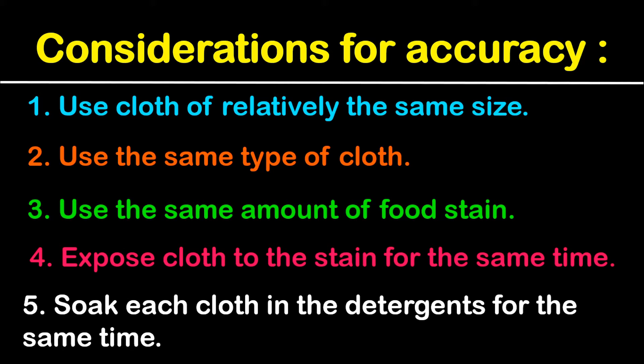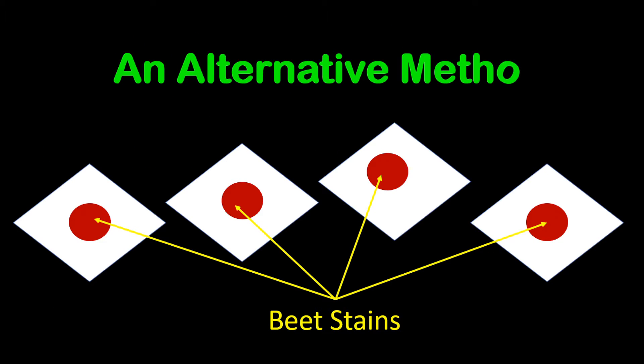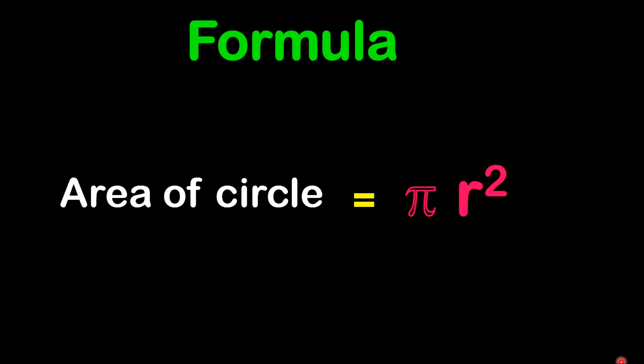An alternative method is that you can use a geometric compass to draw circles on each cloth of equal diameter. Then you can use food stains such as beet gravy or even a piece of meat to stain only the circular portion. Now based on the formula for the area of circle, which is given as pi r square, after the experiment is finished you can now determine or predict the percentage of the circular portion that still contains food stain.